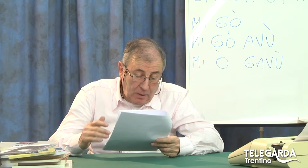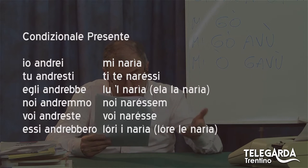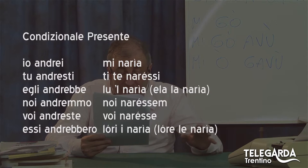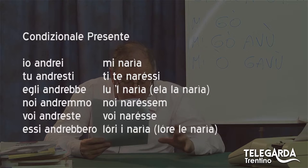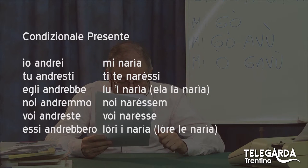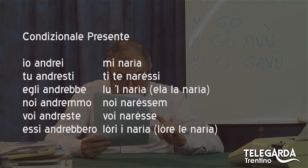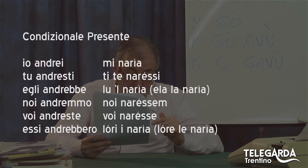Finito il congiuntivo, andiamo al condizionale. Io andrei, tu andresti, gli andrebbe, noi andremmo con due m. Mi naria — bell'accento tonico sulla i — ti te naressi, lul naria o ella la naria per il femminile. Noi naressem — accento tonico sulla e, prima e, accento fonico chiuso — voi naresse, lori i naria.